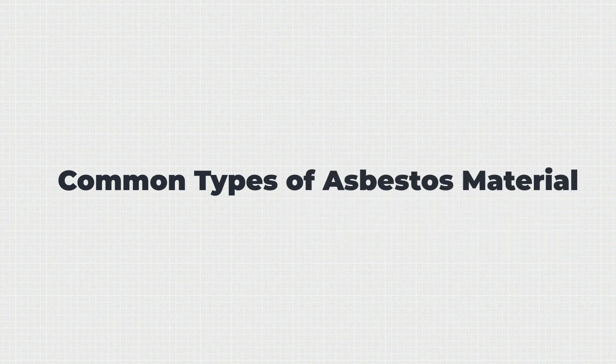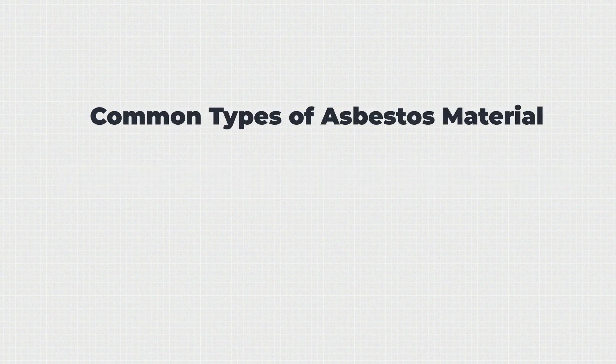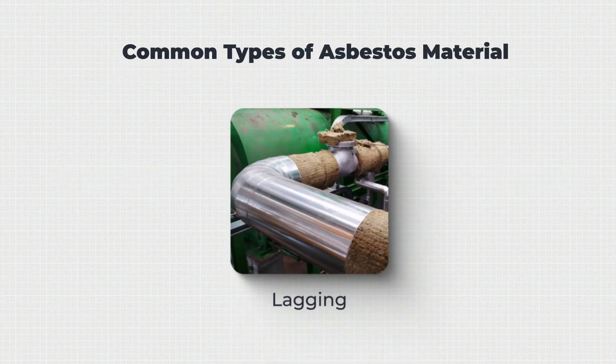Let's look at some common types of asbestos material in detail — they were used prolifically in the UK prior to being banned. Lagging is possibly the most recognisable form of asbestos material. These were thickly laid around pipes and boilers to prevent heat loss, and have been known to consist of almost 100% asbestos fibres.